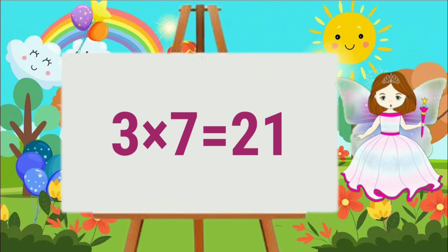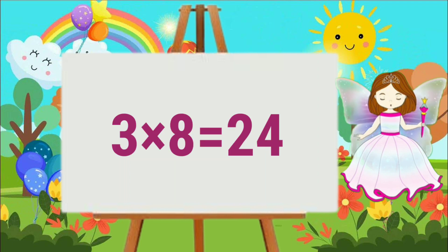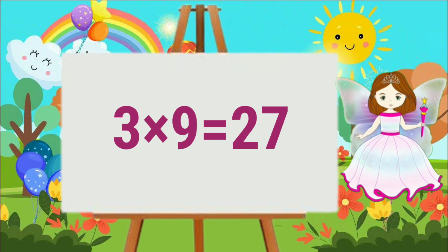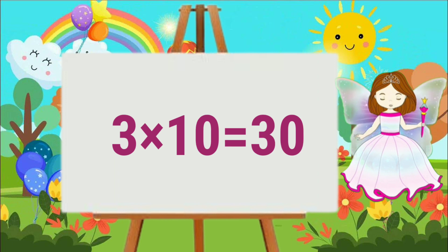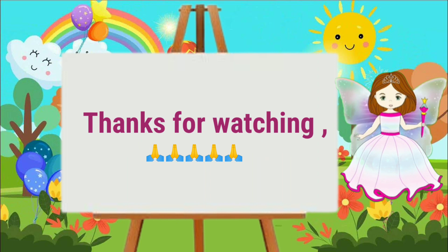Three eight's are twenty-four. Three nine's are twenty-seven. Three ten's are thirty.